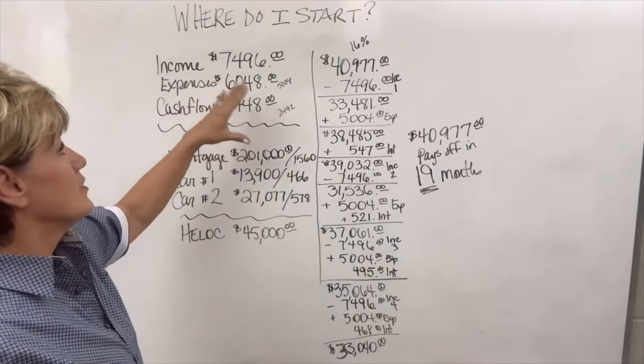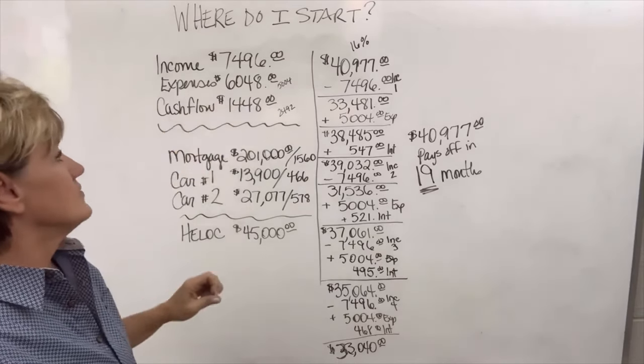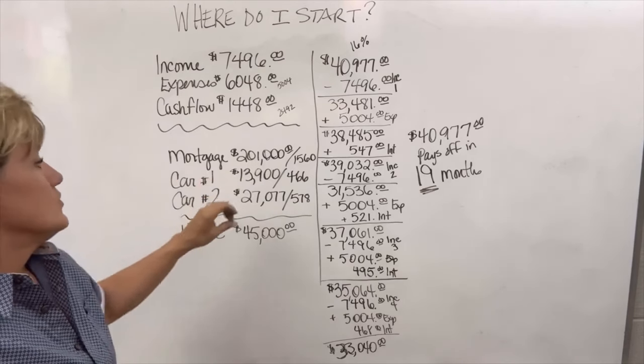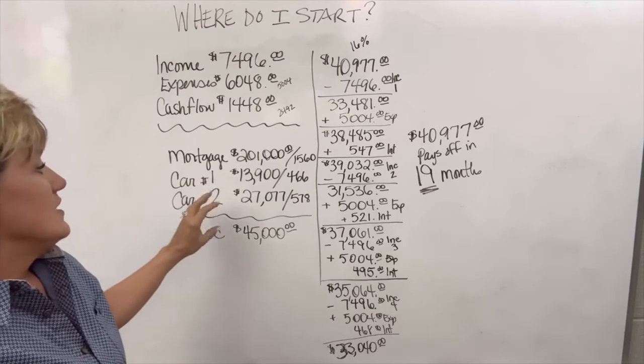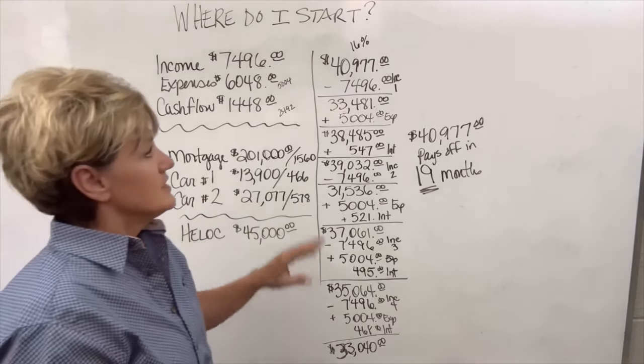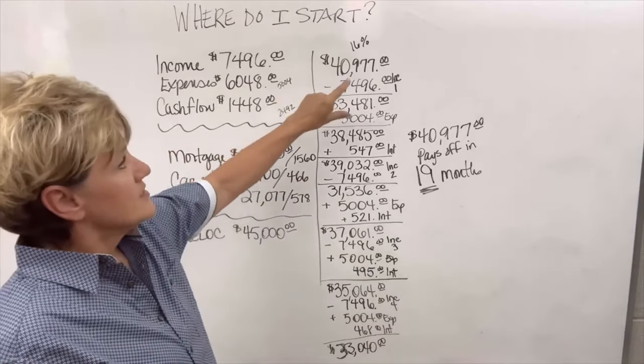Okay. So this couple has an income of $74,916. Their expenses currently stand at $6,048 and cash flow at $1,448. A mortgage at $201,000, two cars, one at $13,200 and one at $27,777. The HELOC at $45,000 is what we could use. We would pay off the two cars at $40,977.